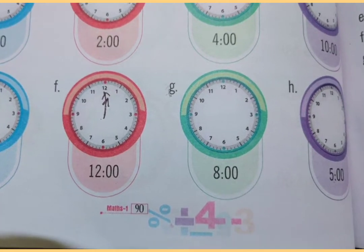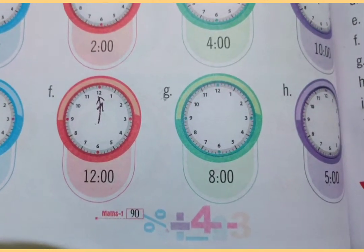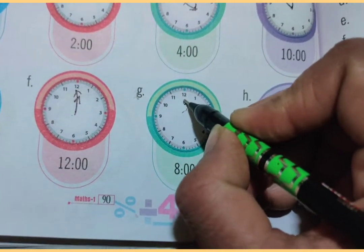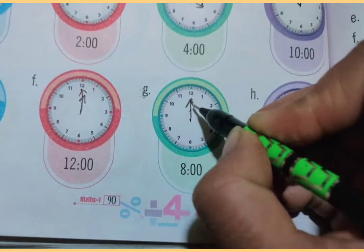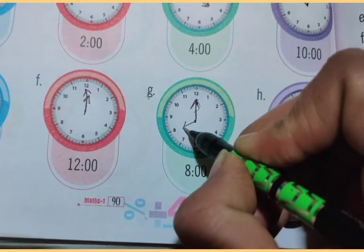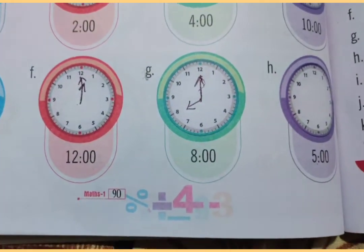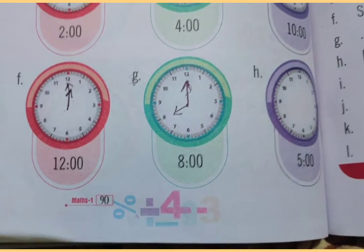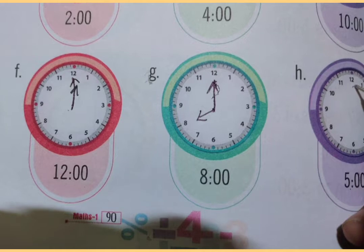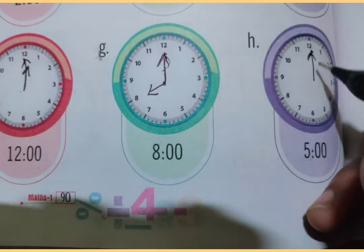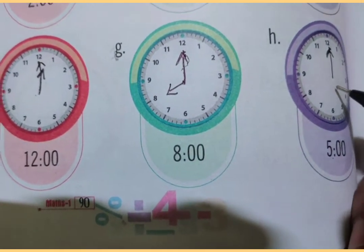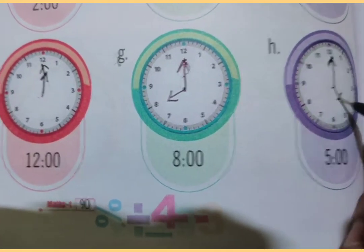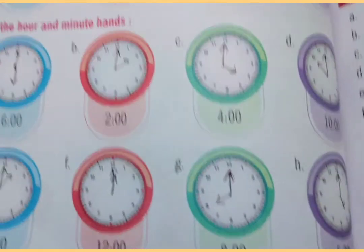Next is eight o'clock. Draw the minute hand at 12 and the hour hand at 8. So the time is eight o'clock. Next part H: the time is five o'clock. Draw the minute hand at 12 and the hour hand at 5. These are all the times.